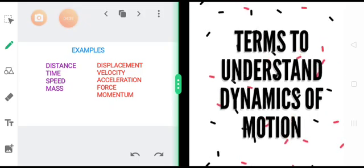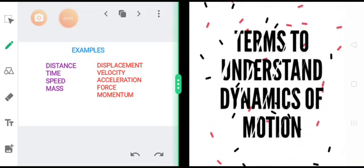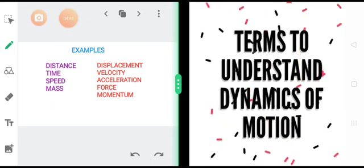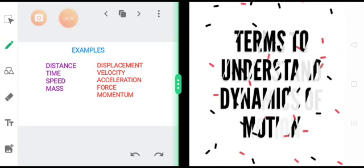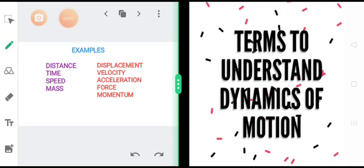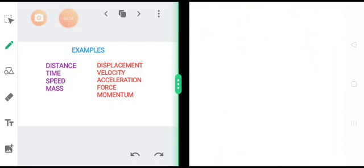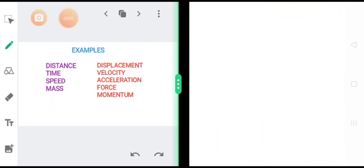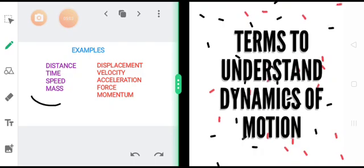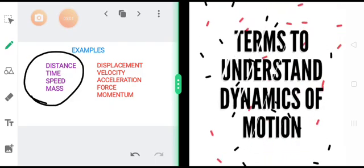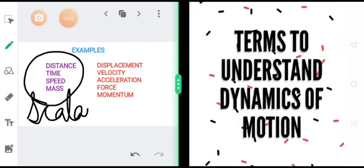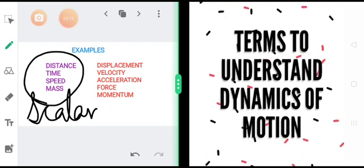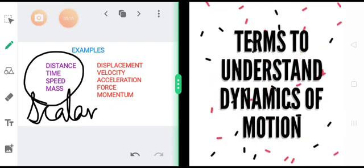Similarly, if someone asks what is the time right now and you say 5 pm, that has nothing to do with whether you are mentioning the time towards north, east, west, or south. Just imagine saying your mass is 40 kg in the north and 50 kg in the south — that is absolutely wrong and makes no sense. So all physical quantities that have only magnitude are placed in one group called scalar quantities.